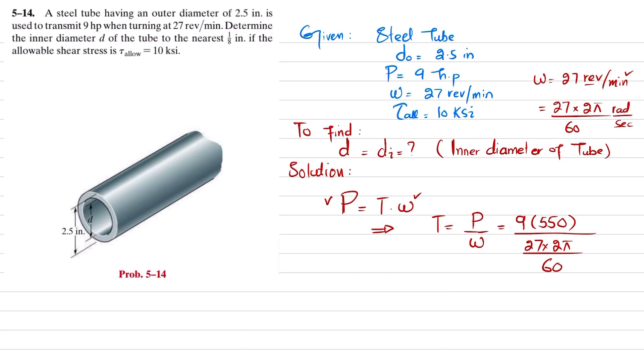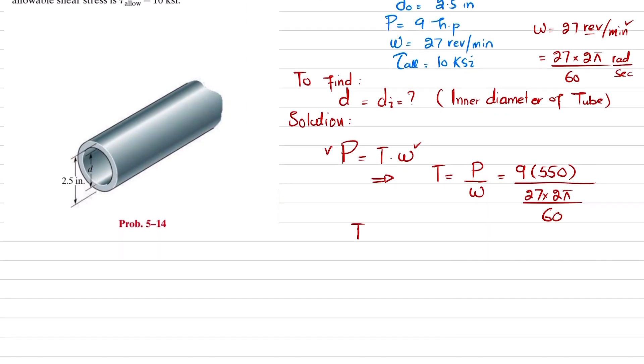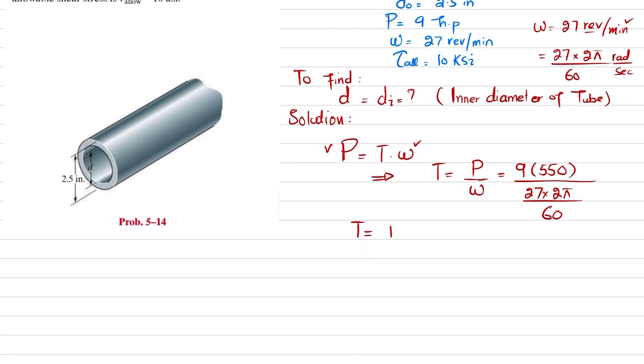So I will write all this value: 27 multiplied by 2π over 60, and this unit will be in pounds-feet. When you solve it, you will get 1750.7 pounds-feet. This is the torque.